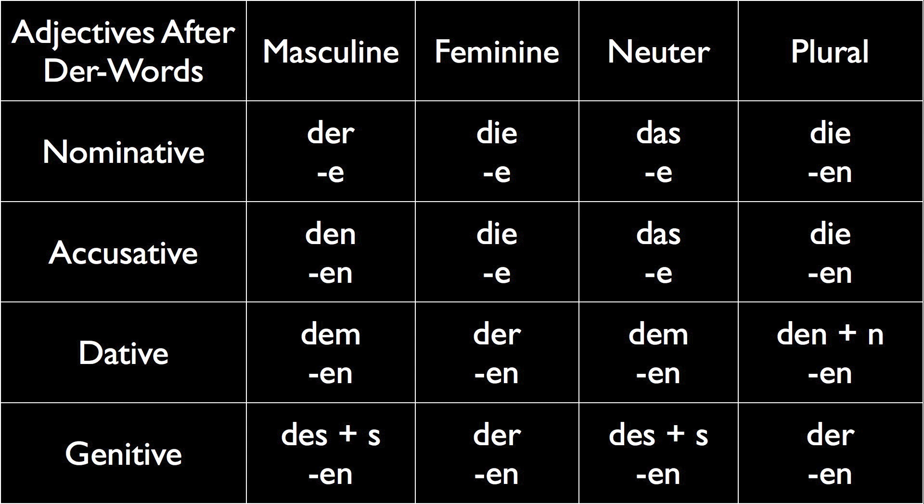Now that we've reviewed the cases, we're ready to talk about the adjectives. We're going to start with the adjectives after der words because they're the easiest to remember. All of these adjective endings are going to either be an E or an EN. The ones that take an E are the masculine, feminine, and neuter in the nominative case, and the feminine and neuter in the accusative case. Everything else takes an EN. The dative plural is not only Denen but there is also an N at the end of the noun as well. The genitive neuter and masculine will be des, and there is an S at the end of the noun.